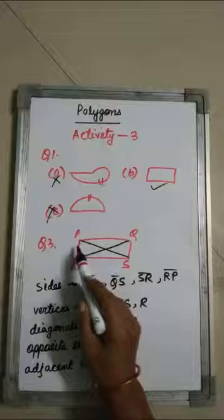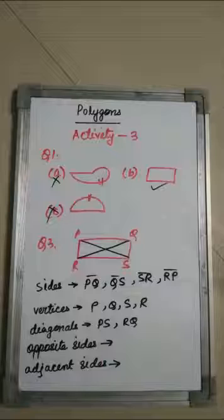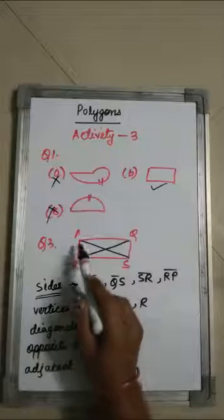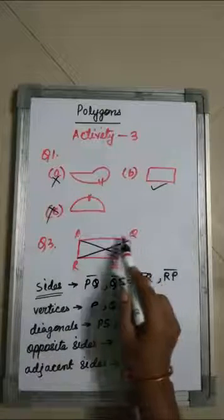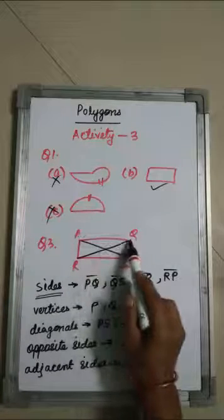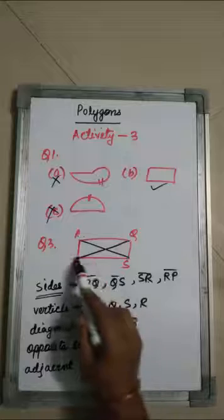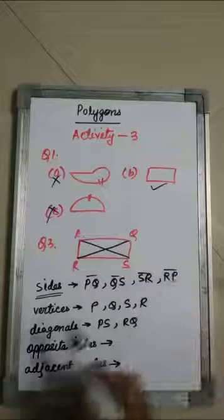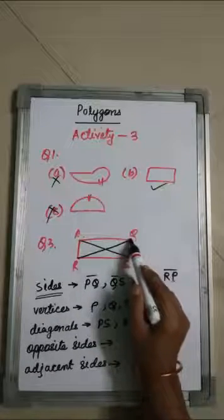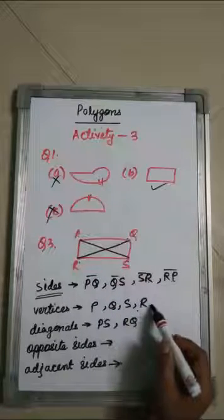Question number 3: you are given quadrilateral PQRS — a quadrilateral means a figure with four sides. You have to identify the sides, vertices, and diagonals. The sides are PQ, QS, SR, and RP. The vertices — the points where lines meet — are P, Q, S, and R. For diagonals, joining opposite vertices: the diagonals are PS and RQ.